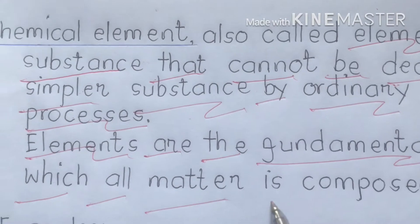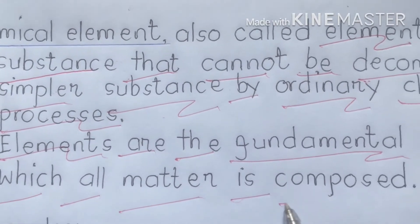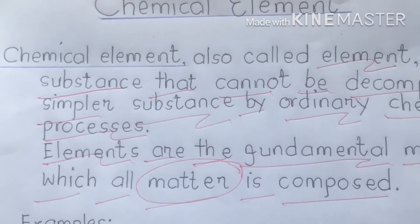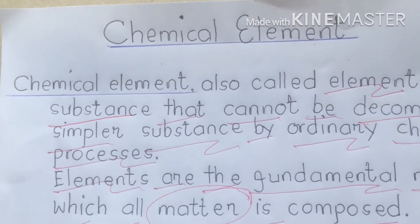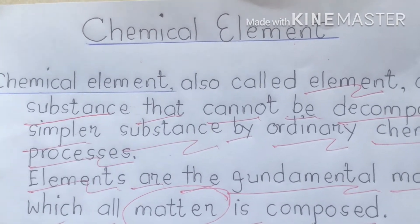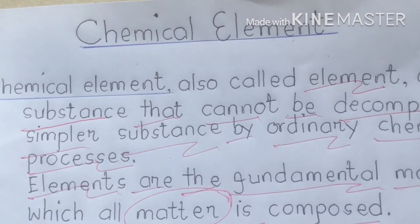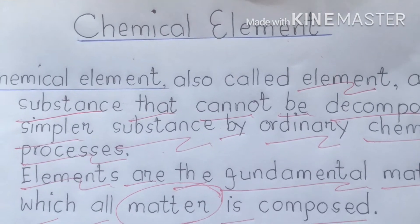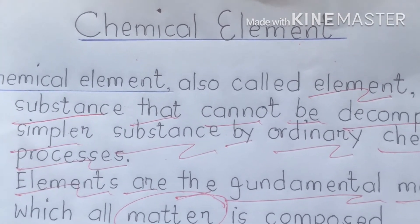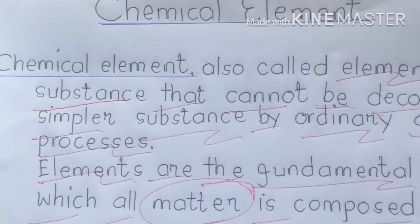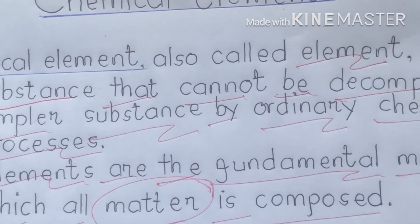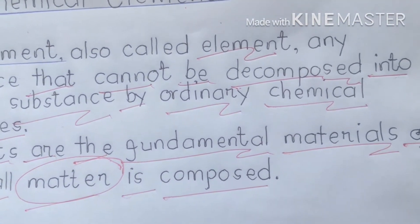Elements are the fundamental materials of which all matter is composed. Matter is composed of solid, liquid, and gas. Without the three phases of matter, we can't live in this world, because we need solid matter, liquid matter, and gas matter.